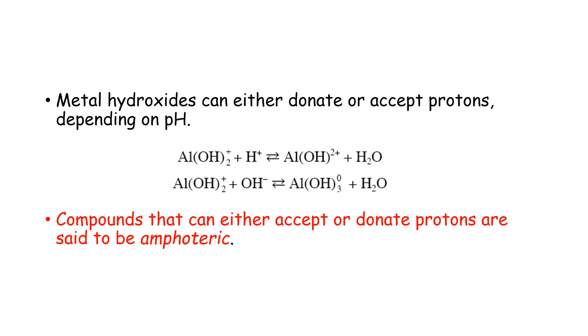Metal hydroxides can either donate or accept protons depending on the resident pH. For example, Al(OH)3 plus H plus gives you Al(OH)2 plus plus water, and Al(OH)2 plus OH minus gives you Al(OH)3 plus water. Compounds that can either accept or donate protons are said to be amphoteric in nature.